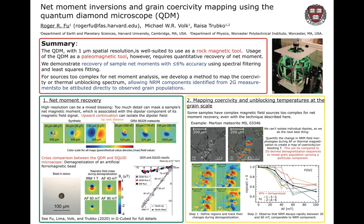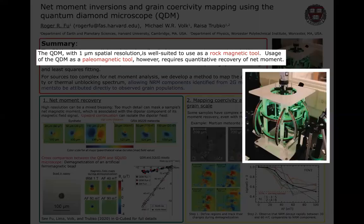The QDM, or the Quantum Diamond Microscope, is a recently developed imaging magnetometer that can produce micrometer resolution maps of magnetic fields. So far, it has been used in about half a dozen studies as a rock magnetic tool, specifically in identifying the carriers of magnetizations in a range of rock samples.